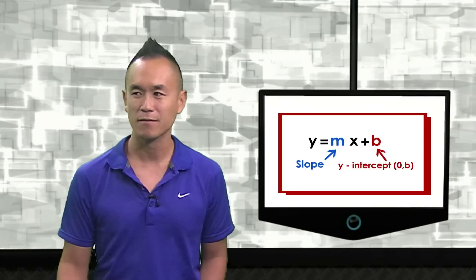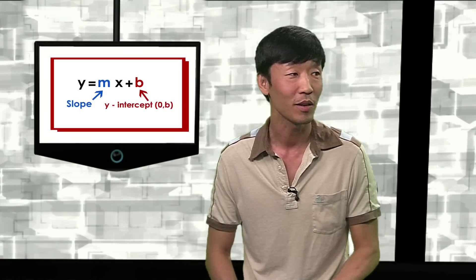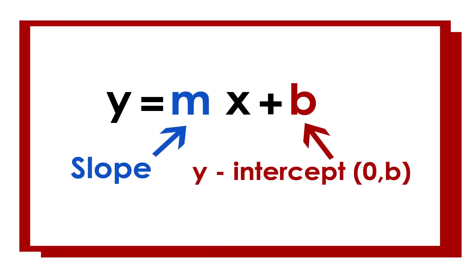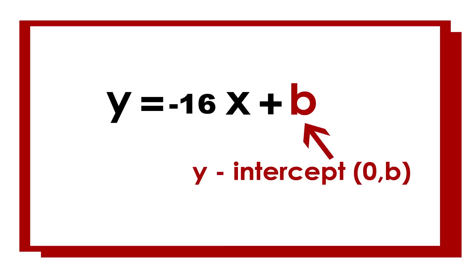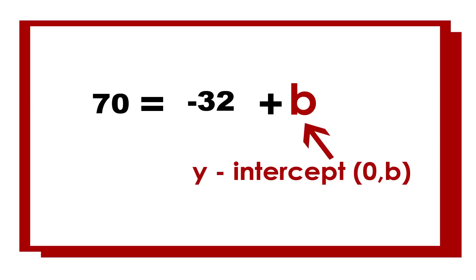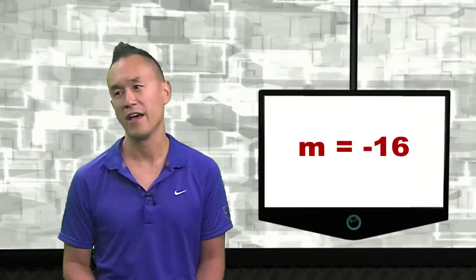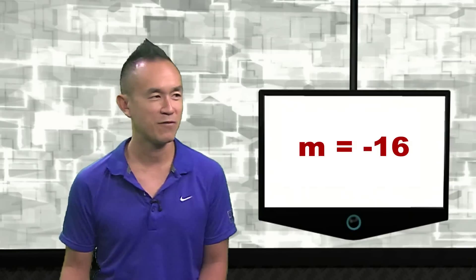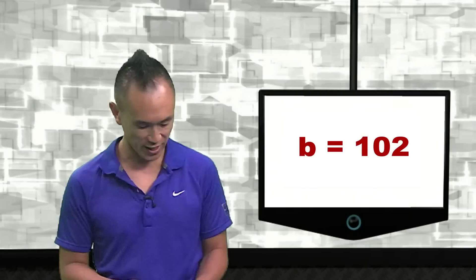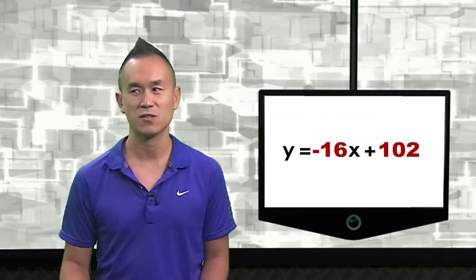How do I find the y-intercept? We have y equals mx plus b, and we have m already calculated as negative 16. So we can plug one of the points into x and y, and then solve for b. It doesn't matter which point, but we're going to go with (2, 70). Plug in 70 for y and 2 for x: 70 equals negative 16 times 2 plus b, giving 70 equals negative 32 plus b. Add 32 to both sides and b equals 102. So the equation of our line is y equals negative 16x plus 102.